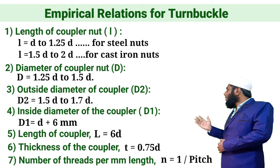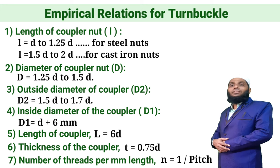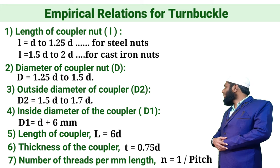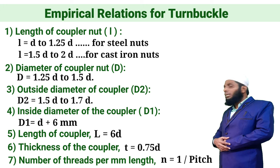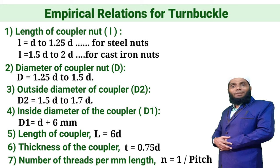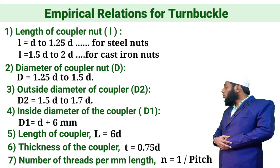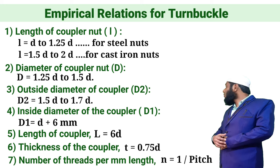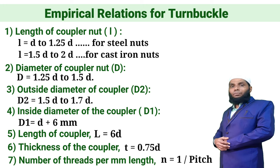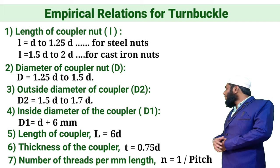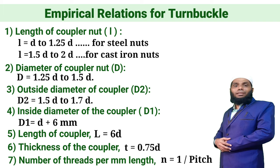These are the few important empirical relations used in the design of a turnbuckle: length of coupler nut, diameter of coupler nut, outside diameter of coupler, inside diameter of coupler, length of coupler, length of coupler nut, and thickness of coupler.